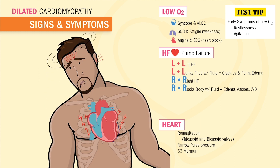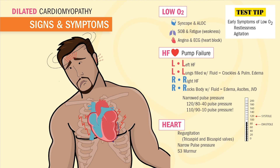We'll also see narrowed pulse pressure, where the blood pressure numbers get closer and closer together. For example, normal blood pressure is 120 over 80, but it starts narrowing to something like 110 over 90, indicating that cardiac output is dropping. Lastly, we'll hear a murmur near the S3 location from the slamming of blood into the stretched-out ventricles.